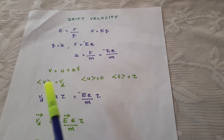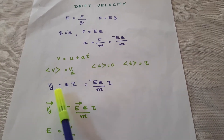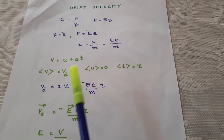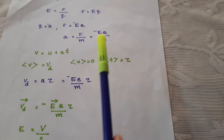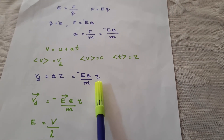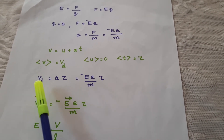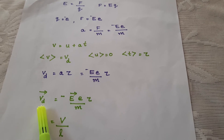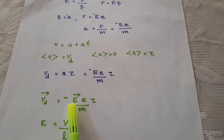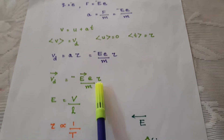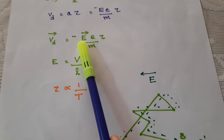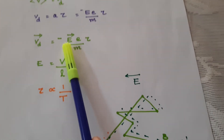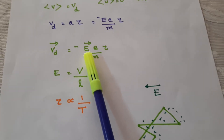Substituting in this equation, drift velocity V_d equals U (which is zero) plus a·τ, that is equal to minus eE by m into tau. Since velocity is a vector quantity, vector V_d equals minus eE by m into tau. This negative sign shows that the velocity of the electron is opposite to the direction of the electric field, meaning the electrons move in a direction opposite to the electric field.